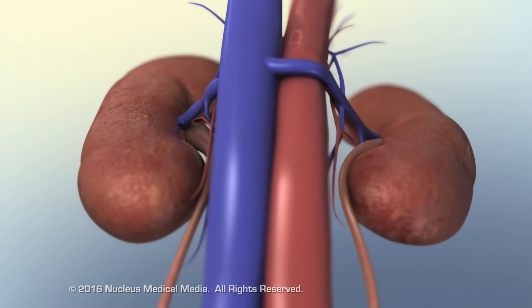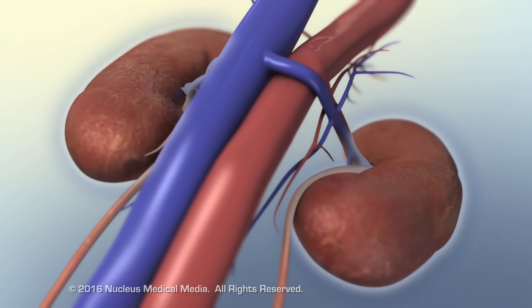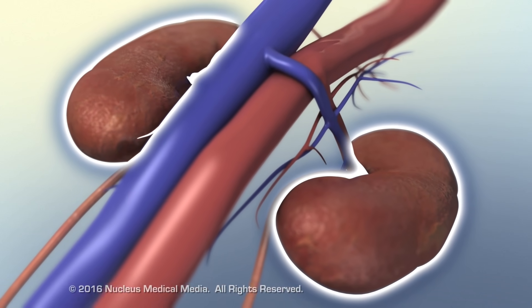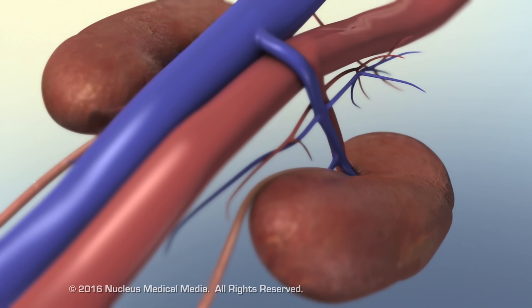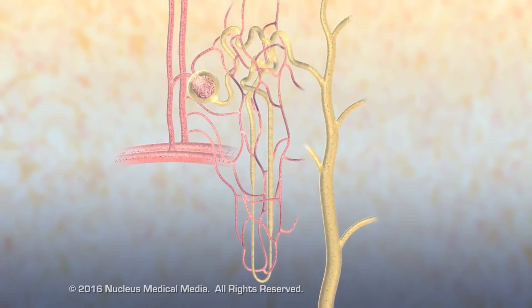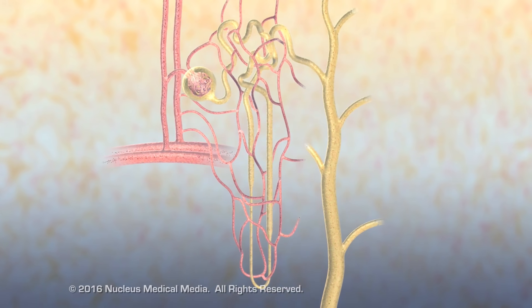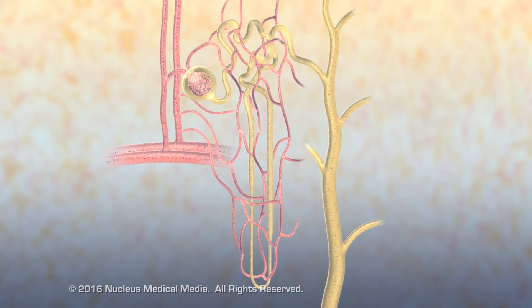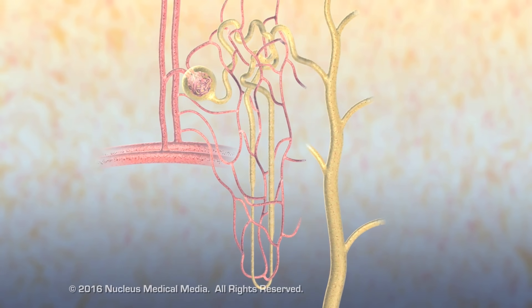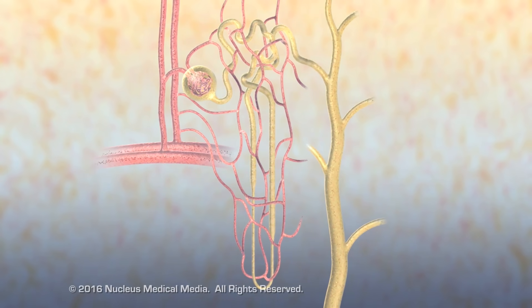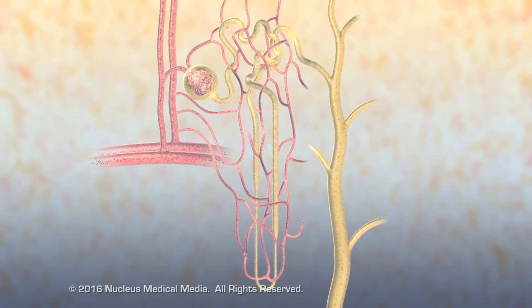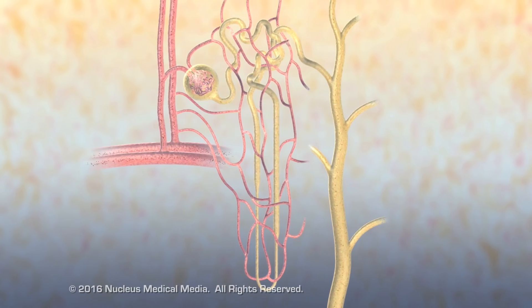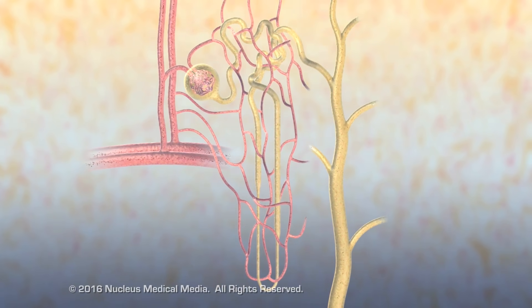Generally, health professionals refer to the ability of the kidneys to filter blood as renal function. Nephrons, the functional and anatomical units of the kidney, filter blood, regulate fluid volume and pH, and control levels of electrolytes in the body.